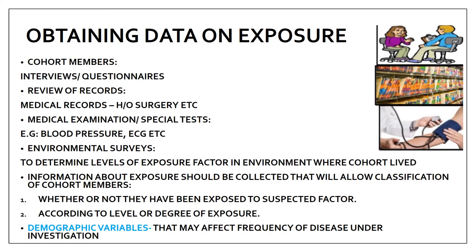Step two is obtaining data on exposure. Information may be collected directly from cohort members through interviews or questionnaires, through review of medical records (e.g., previous surgeries), through medical examination and special tests (blood pressure, ECG), or through environmental surveys to determine the level of exposure in the environment where the cohort lives. Data should classify cohort members by whether they were exposed and by the degree of exposure.